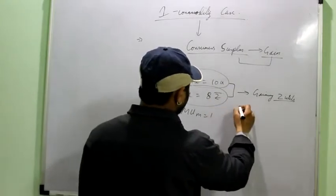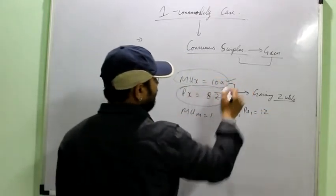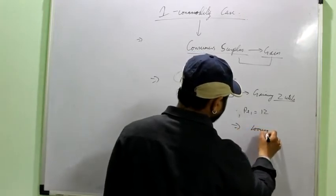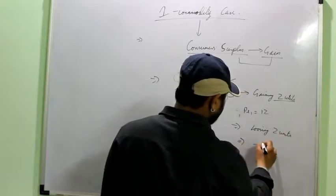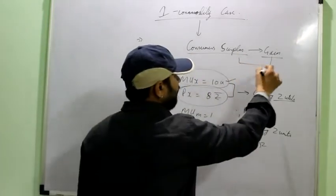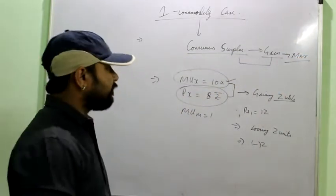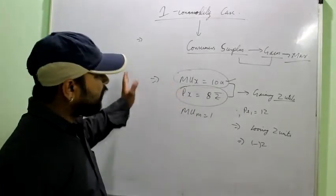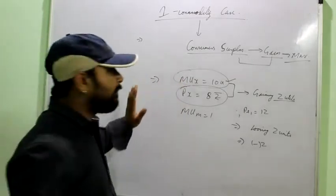This is known as consumer surplus or gain. Similarly, if the price of the commodity would have been say 12, and the utility remains same, then the consumer would be losing 2 utils, or you can say consumer surplus will be minus 2. This concept and the equilibrium is based on maximizing the consumer's surplus. You have to maximize the total gain of the consumer. Means it is the best possible situation. He cannot get more than this gain by consuming any more unit of that particular commodity.